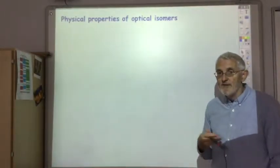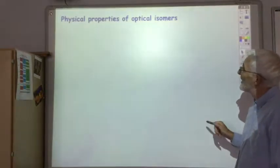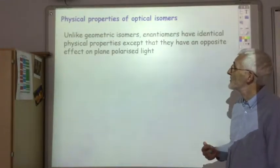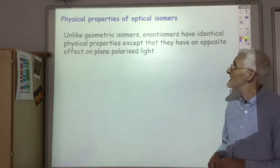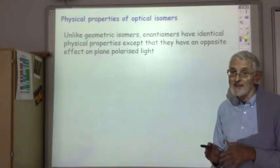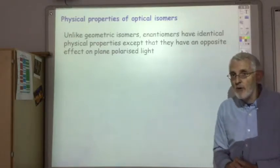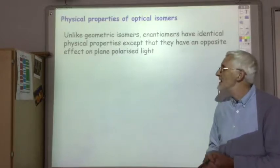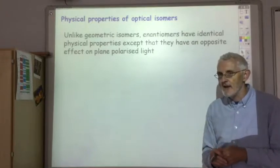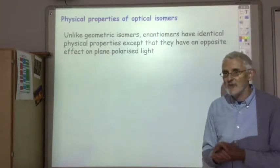What's the difference in the physical and chemical properties of optical isomers? When it comes to physical properties, unlike geometric isomers which had slight differences in melting points and boiling points, enantiomers have identical physical properties in all things except this rather weird thing: they have an opposite effect on plane polarized light. You don't need to have a great understanding of it, but it's one of the ways you can identify and differentiate between the enantiomers.